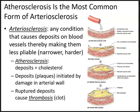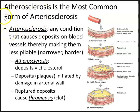Moving into pathology: arteriosclerosis is any condition that causes deposits on blood vessels, making them either narrower or harder — less pliable. Arteriosclerosis is the name of the generalized condition, whereas atherosclerosis is a type of arteriosclerosis and is actually the most common form.